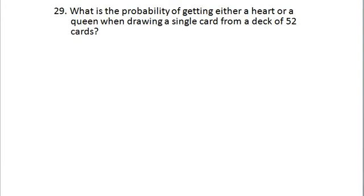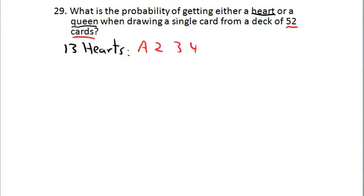What is the probability of getting either a heart or a queen when drawing a single card from a deck of 52 cards? We're looking for a heart or a queen. There are 13 hearts — the ace, 2, 3, 4, 5, 6, 7, 8, 9, 10, jack, queen, and king. So we know there are 13 hearts.